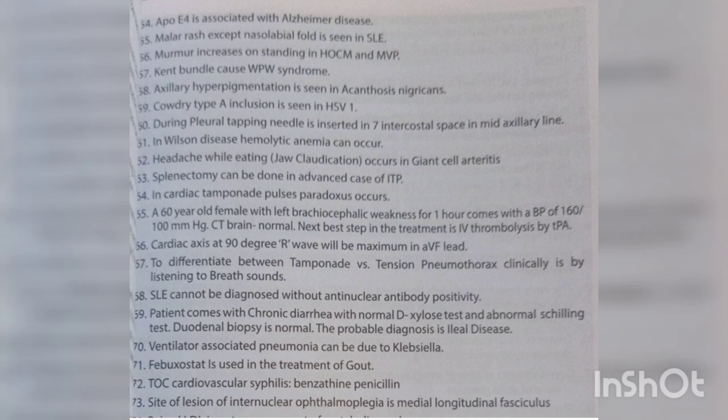SLE cannot be diagnosed without antinuclear antibody positivity. A patient comes with chronic diarrhea with normal D-xylose test and abnormal Schilling test — duodenal biopsy is normal. The probable diagnosis is ileal disease.